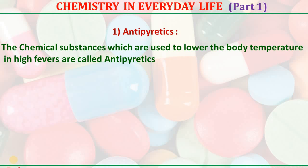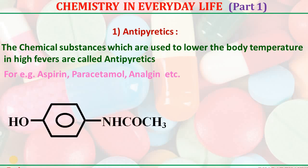The chemical substances which are used to lower the body temperature in high fever are called antipyretics. For example, aspirin, paracetamol, allergen, etc.